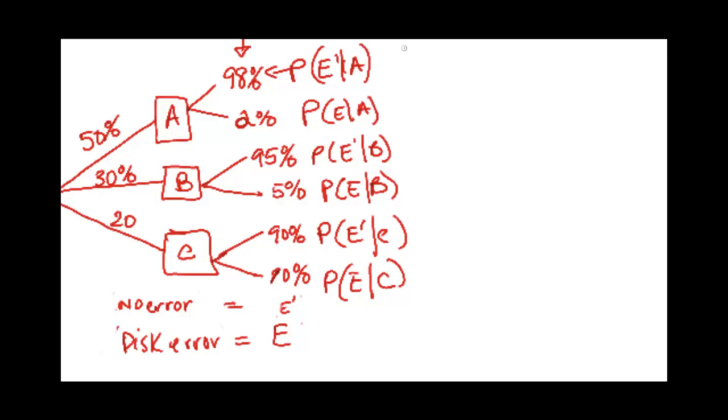All right, so if you want the intersection of any of these events, so, for instance, error and A intersection, you would use the conditional probability formula.